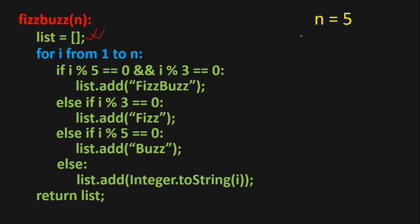Let's trace through how it works for N equals 5. For the first iteration i equals 1: 1 is not a multiple of 5 and 3, so it's converted to a string and added to the list. For the next iteration i equals 2: 2 is not a multiple of 5 and not a multiple of 3, so we convert 2 to a string and add it to the list. For the next iteration i equals 3: 3 is a multiple of 3, so we add 'Fizz'.